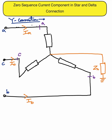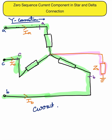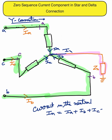In the star connection there is phase A, phase B, and phase C — three phases in the form of a star connection. In these phases, a neutral current In is flowing, and there is a neutral impedance Zn. The current in the neutral, In, is equal to the sum of all three currents: In = Ia + Ib + Ic. That is equation number one.